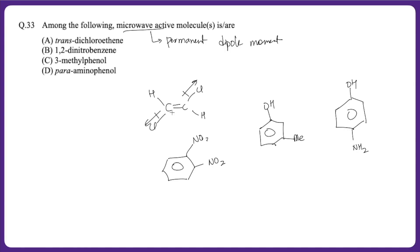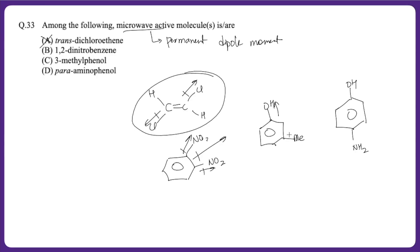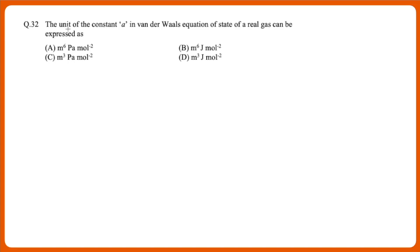Option A does not have a permanent dipole moment since the dipolarities cancel — it is a non-polar molecule, so option A is wrong. 1,2-Dinitrobenzene has an overall dipole moment because the polarities add up, so it has a permanent dipole moment. Option C also has dipole moment due to asymmetrically attached groups. Option D also has an overall dipole moment because oxygen is more electronegative than nitrogen. So the correct options are B, C, and D — all three are microwave active.